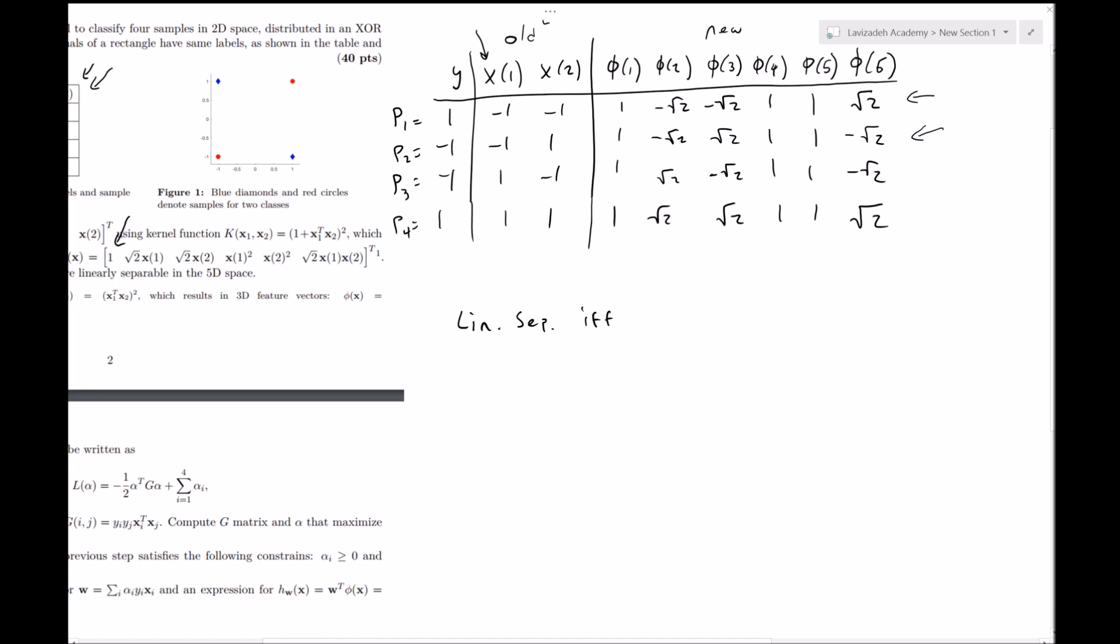The data set is linearly separable if and only if there exists some w vector, sometimes called a weight vector, such that two conditions hold. One is that w transpose phi, which is our new feature vector, is greater than zero if the label corresponding to that phi is y equal to one, and less than zero if the label corresponding is negative one. To be more exact, these would have subscripts for each data point i, and this is true for all i.